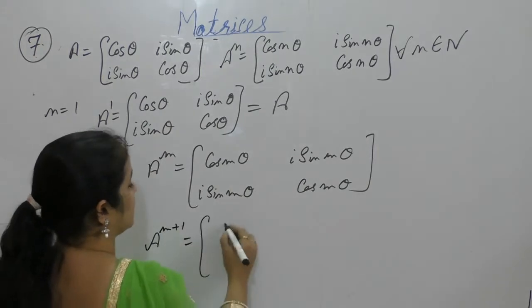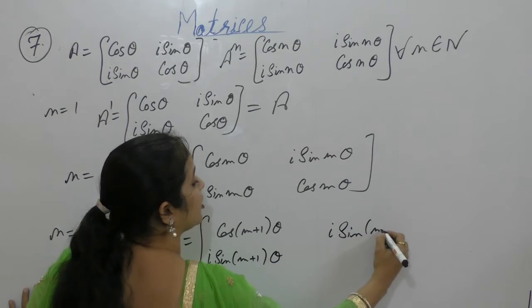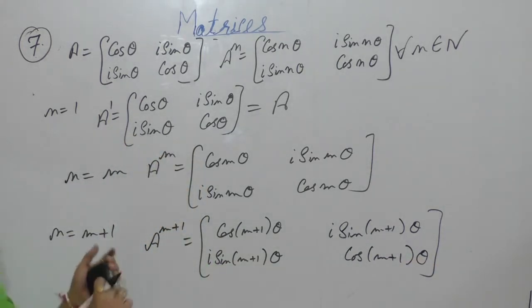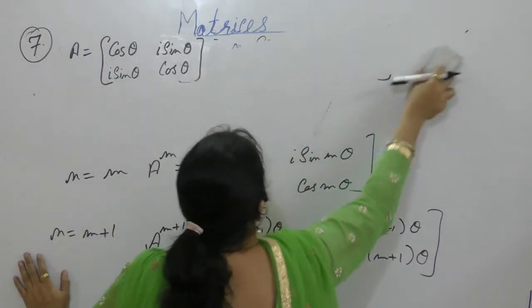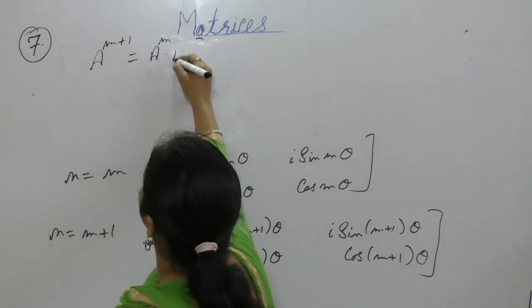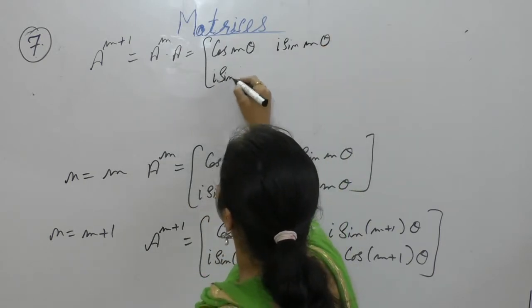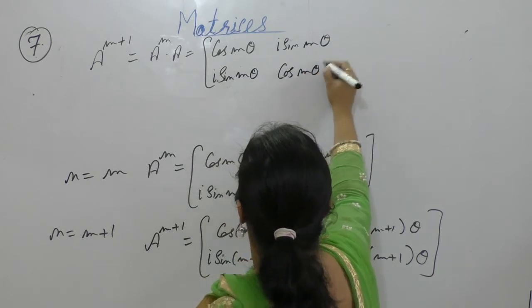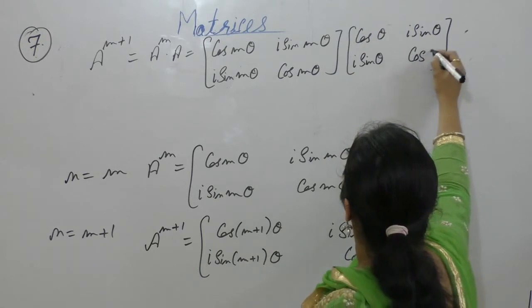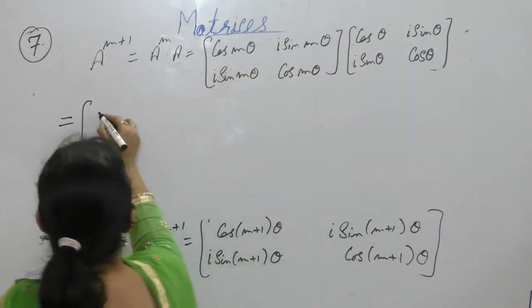Now we want to prove that the result is true for n equal to m plus 1, so A^(m+1) should equal [cos(m+1)θ, isin(m+1)θ; isin(m+1)θ, cos(m+1)θ]. We can write A^(m+1) as A^m into A, where the value of A^m is [cos mθ, isin mθ; isin mθ, cos mθ] multiplied by A which is [cos θ, isin θ; isin θ, cos θ].